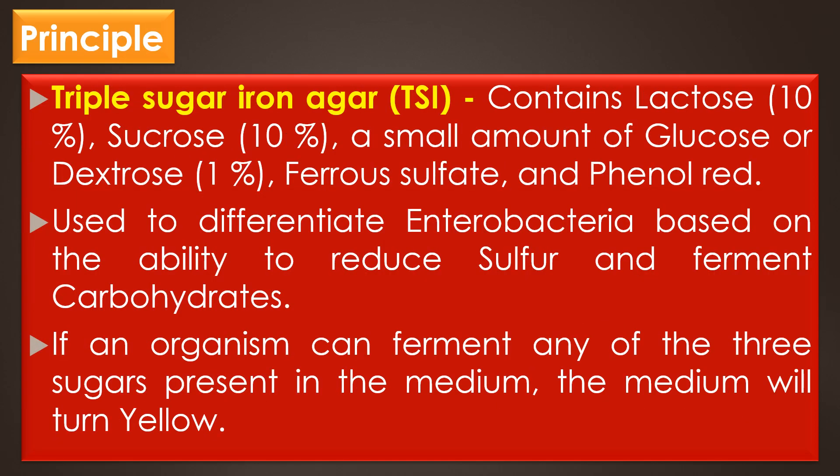Principle. Triple sugar ion agar, or TSI agar, is a differential medium that contains three carbohydrate sugars: lactose 10%, sucrose 10%, and a small amount of glucose or dextrose 1%, ferrous sulfate, and the pH indicator phenol red. It is used to differentiate Enterobacteriaceae based on the ability to reduce sulfur and ferment carbohydrates.